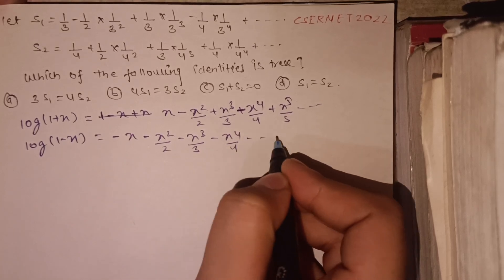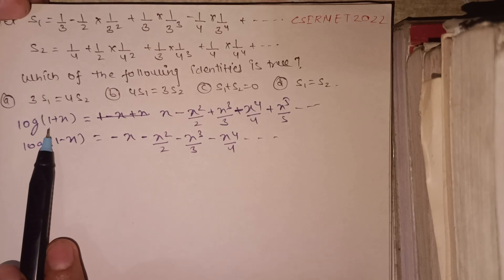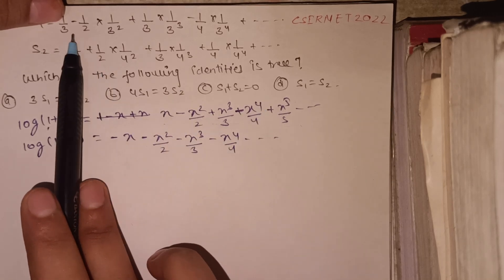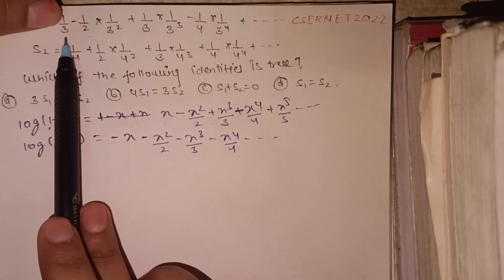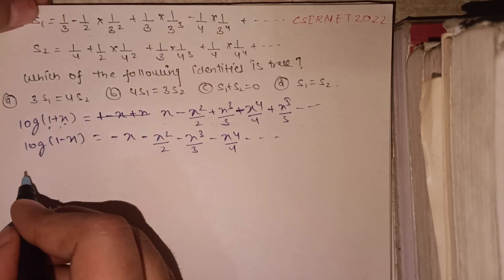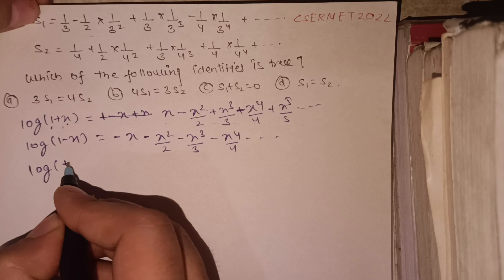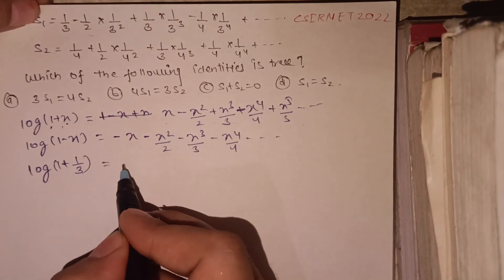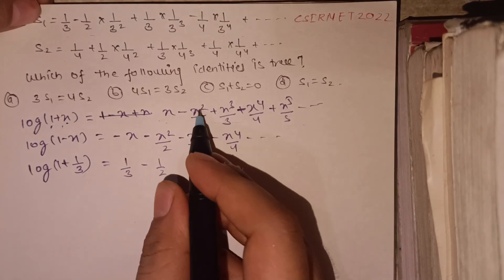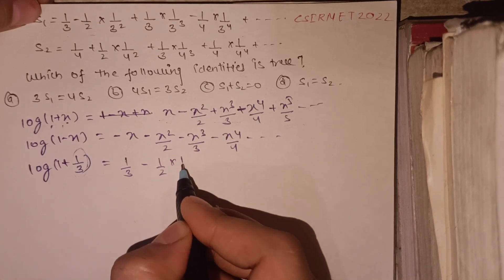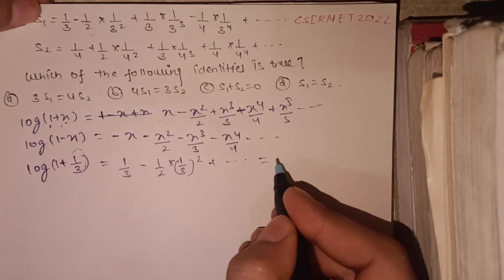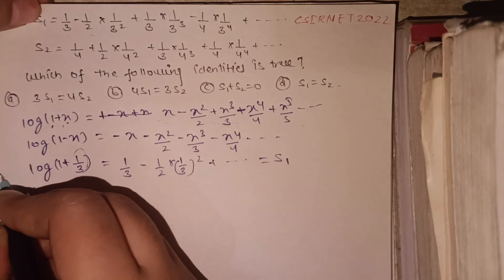If we compare series S1 and put x = 1/3, then log(1 + 1/3) gives us 1/3 minus (1/2)(1/3)² and so on. This series equals S1. So putting x = 1/3 in log(1+x) gives us log(4/3) = S1.